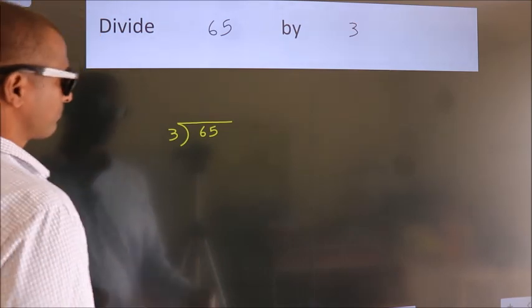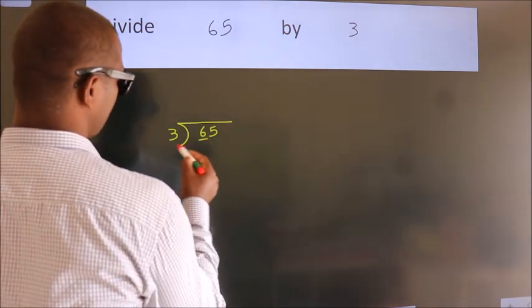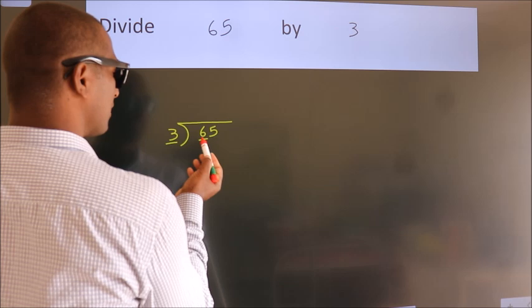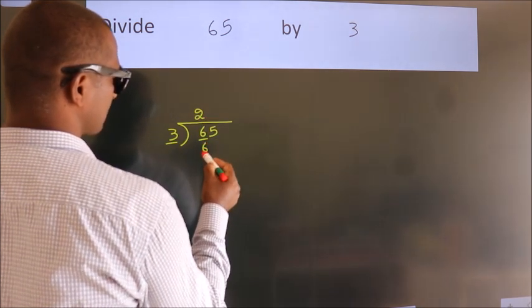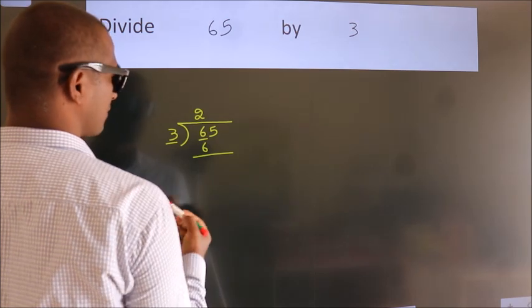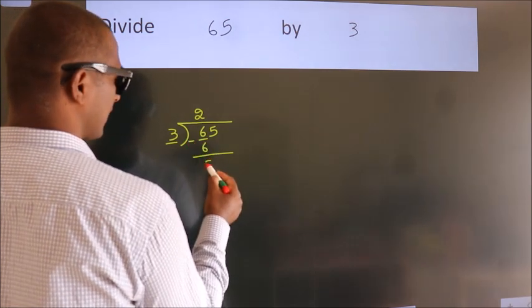Next, here we have 6, here 3. When do we get 6? In the 3 table, 3 times 2 is 6. Now we subtract and get 0.